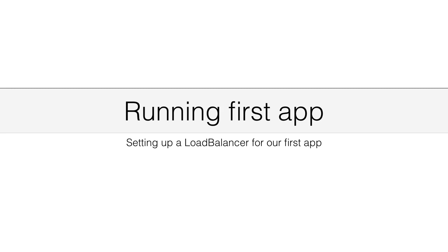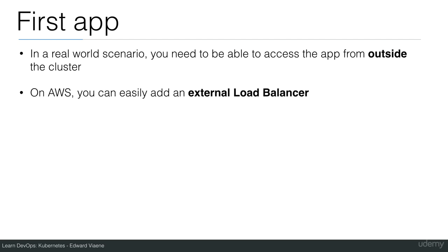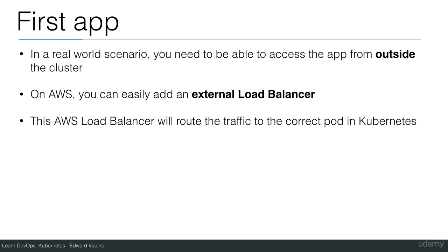In this lecture, I will show you how to set up a load balancer for your first app. In a real-world scenario, you need to be able to access the app from outside the cluster. On AWS, you can easily add an external load balancer. This AWS load balancer will route the traffic to the correct pod in Kubernetes.